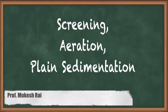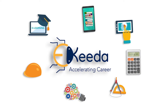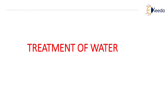Hello students, today we are going to discuss the treatment of water by screening, aeration, and plain sedimentation process. Why do we want to treat the water? We had already studied the quality characteristics of water in which certain parameters are not within the permissible limit. To make those parameters within the permissible limit, we want to treat the water. There will be various processes for the treatment of water, and we will see each one in detail.